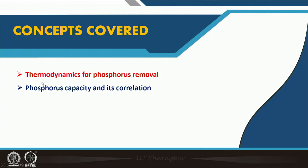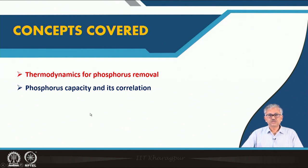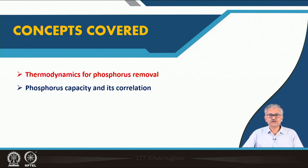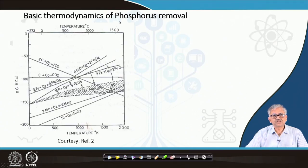The concepts covered basically include the thermodynamics of phosphorus and the phosphorus capacity. This correlation is very important — phosphorus capacity defines how effective the slag is to hold phosphorus, and how it correlates with different parameters. We will discuss the basic thermodynamics of phosphorus removal.